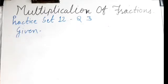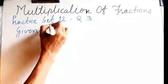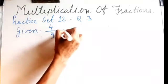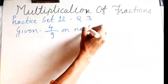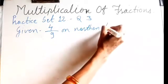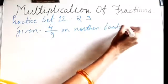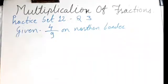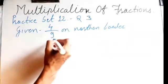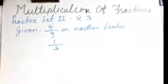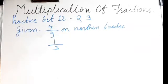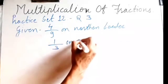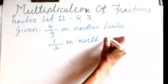Four upon nine are posted on the northern border. Then, one-third of them are on the north-eastern border. One-third means one upon three; one-fourth means one upon four; one-fifth means one upon five — and so on. So one-third of them are on the north-eastern border.